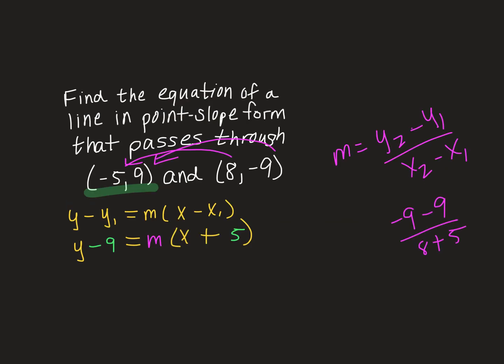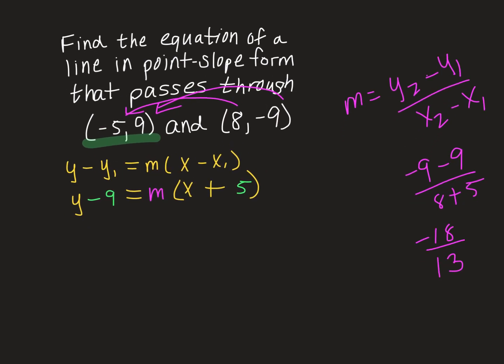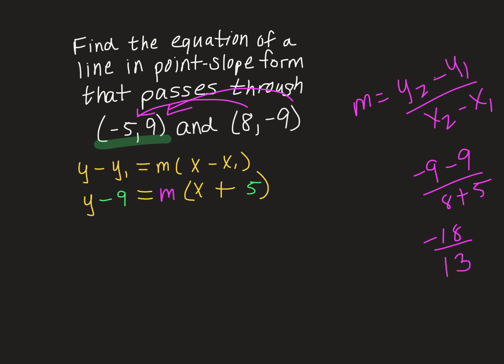So you can see here off to the side where I set that up. I took my second y coordinate and subtracted the first y coordinate. And then because it's 8 minus negative 5, that actually turned it into 8 plus 5 in the denominator. So that leaves me with negative 18 over 13. I think I did that right. So I'm going to replace that m with the slope I just got.